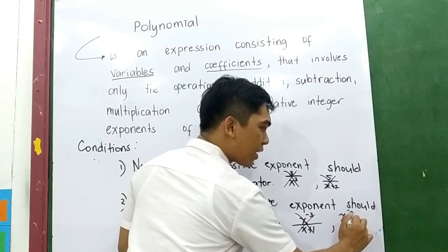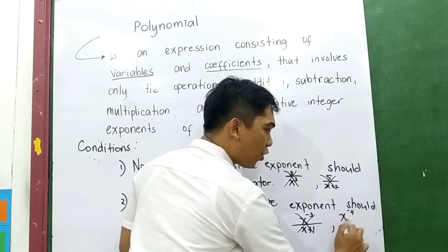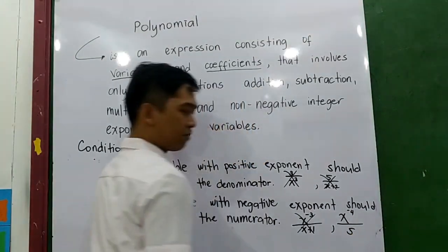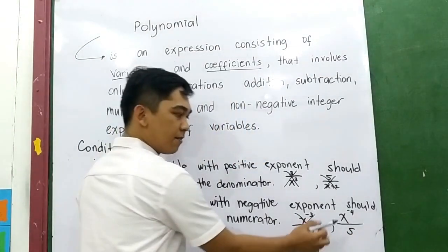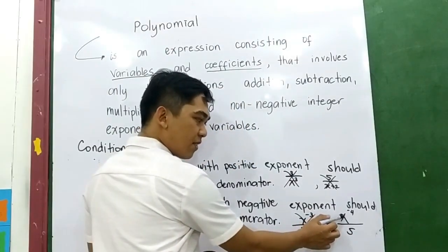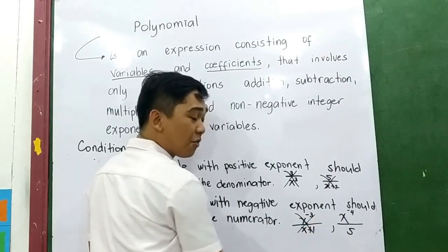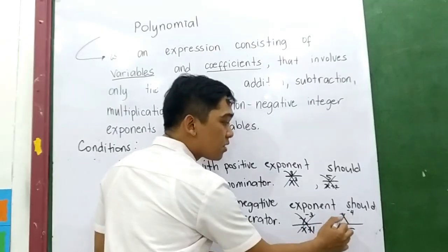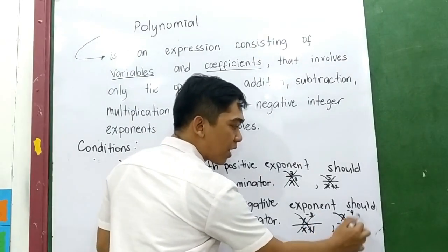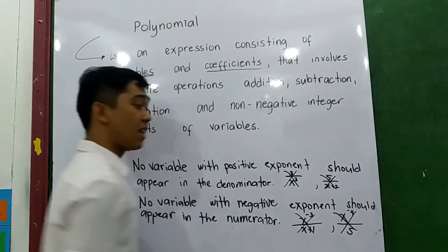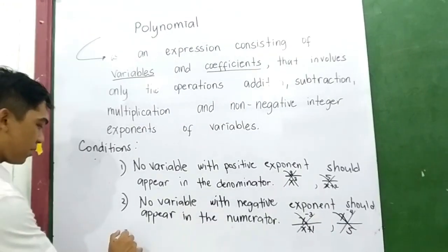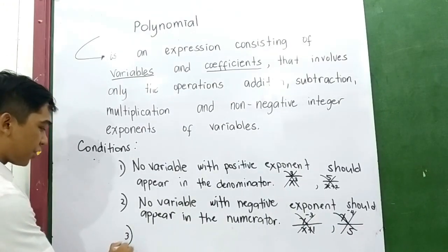Another example: x raised to negative 4 over (x plus 2). The exponent is negative 4, so that means it is not a polynomial.